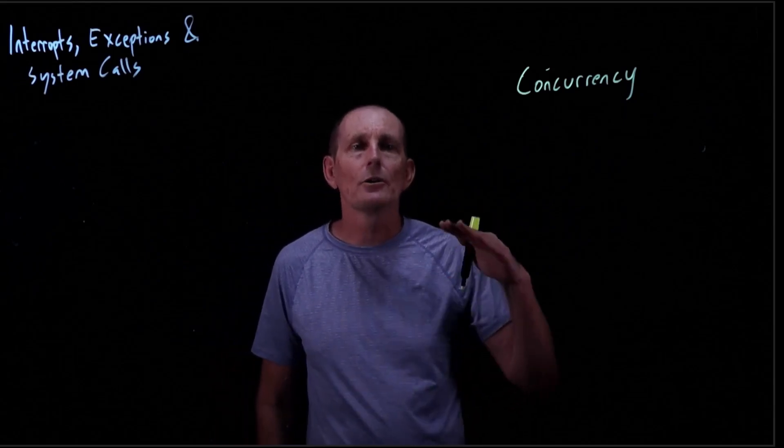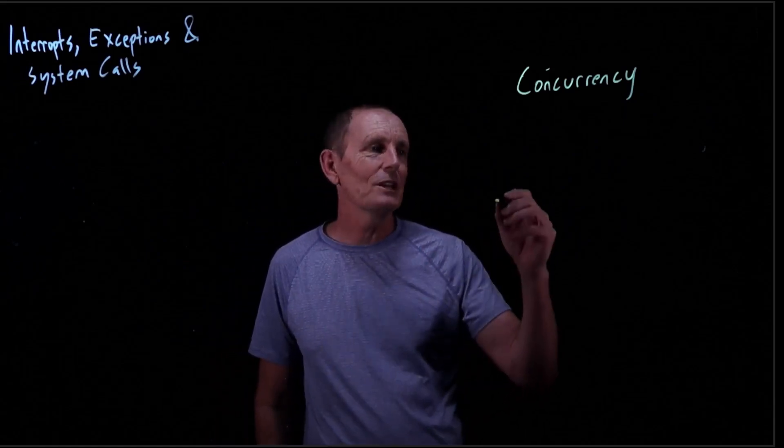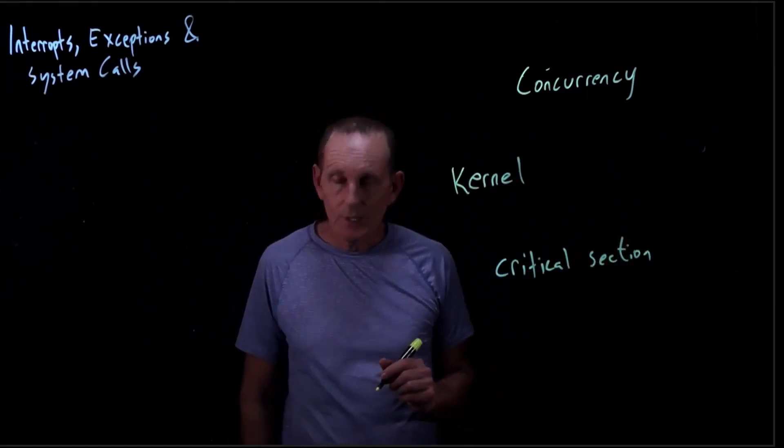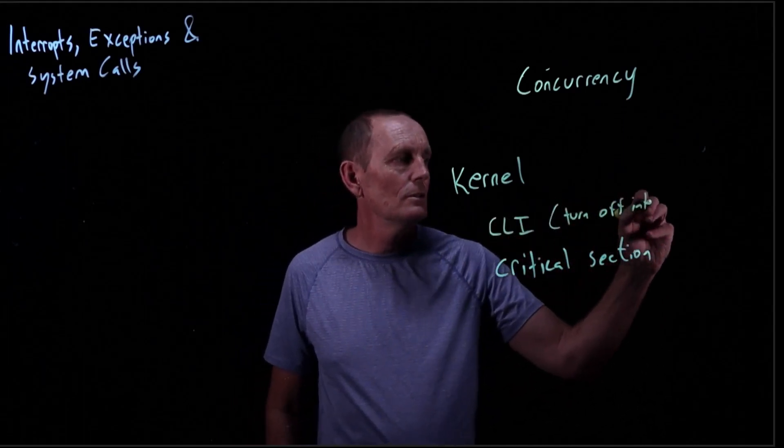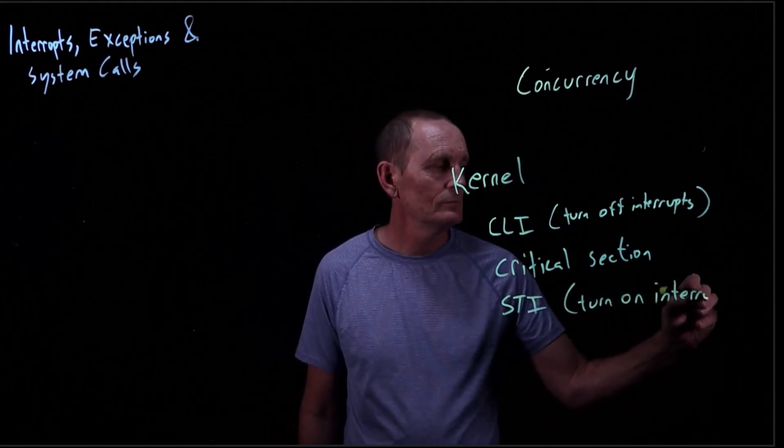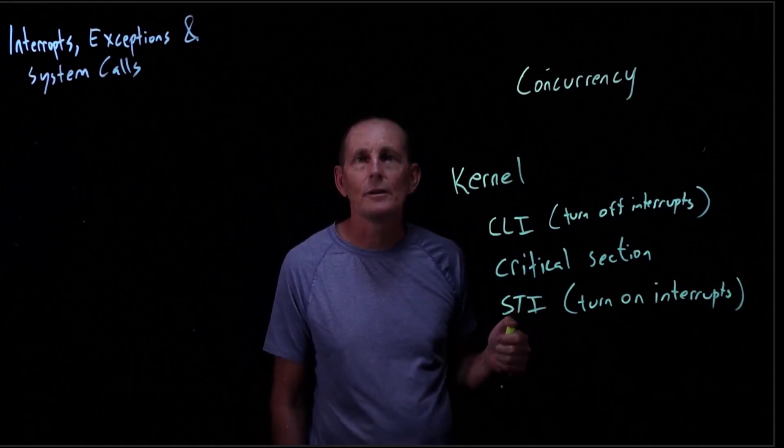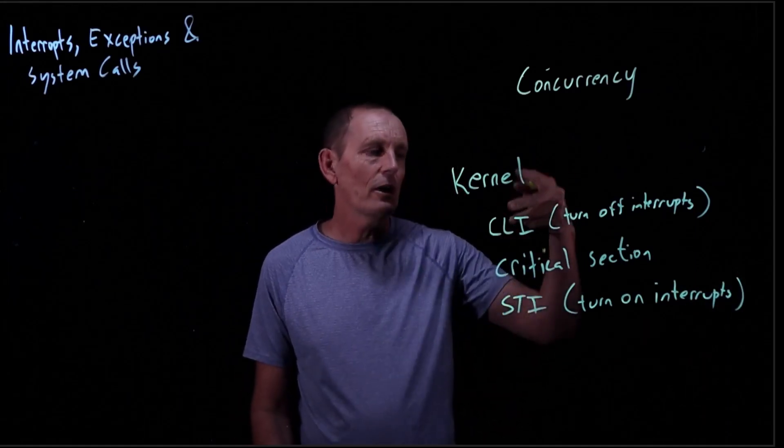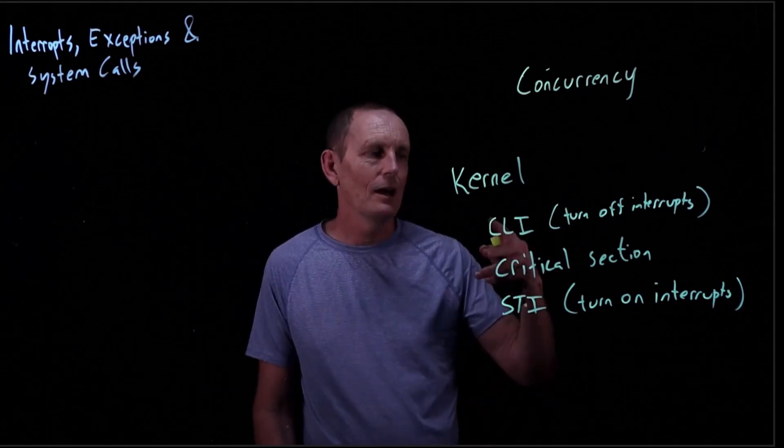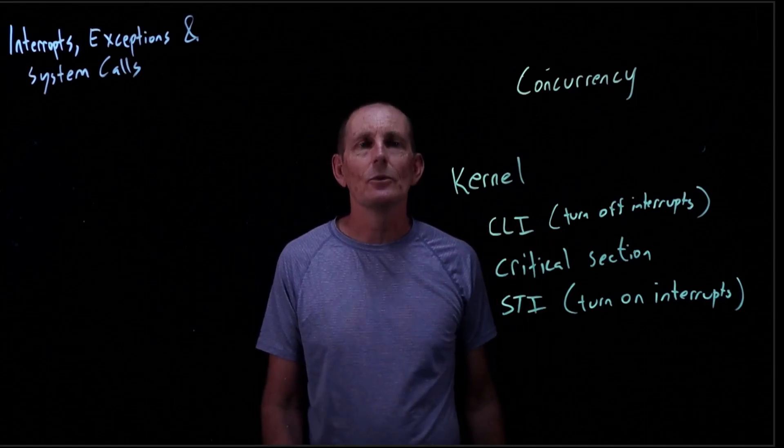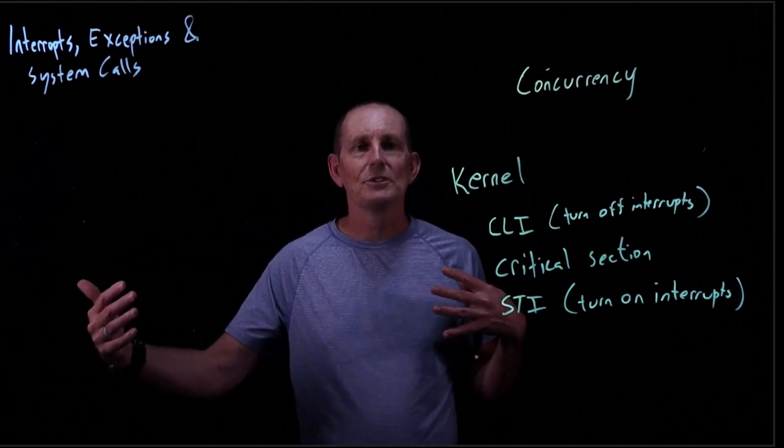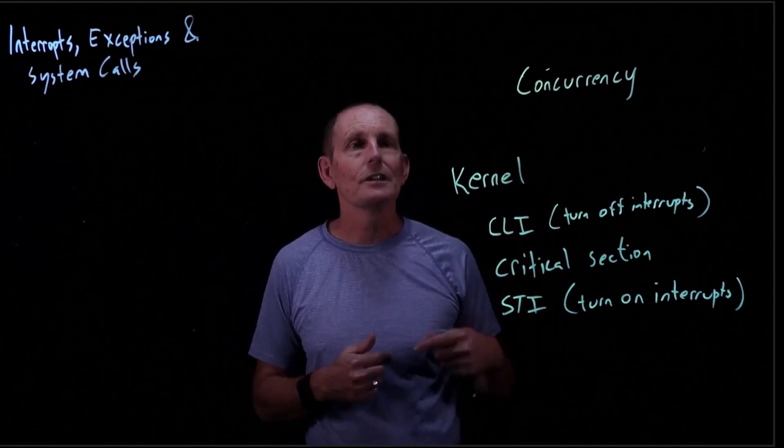In the kernel, what we often do is want to lock code around the critical section. The simplest way: we're in the kernel, we have a critical section. What we can do is issue a CLI, which turns off the interrupts, and then when we're done, an STI, which sets the interrupts back on. There are other ways to deal with locks, and we'll talk about those later, but this is a not uncommon way of making sure we don't have collision between interrupt service routines dealing with data structures and our kernel dealing with data structures.